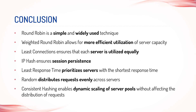Load balancing is a critical aspect of maintaining high availability and performance in distributed systems. There are various load balancing techniques available, each with its strengths and weaknesses. Round Robin is simple and widely used, while Weighted Round Robin allows for more efficient utilization of server capacity. Least Connections ensures that each server is utilized equally, and IP Hash ensures session persistence. Least Response Time prioritizes servers with the shortest response time, and Random distributes requests evenly across servers. Finally, Consistent Hashing enables dynamic scaling of server pools without affecting the distribution of requests. Choosing the appropriate load balancing technique depends on the specific needs and requirements of the system. By understanding these techniques, performance testers and system administrators can effectively optimize their system's performance and availability.